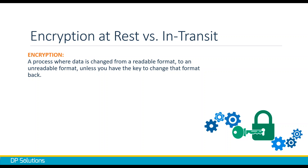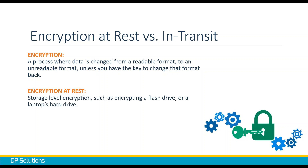This can be used both to your advantage and disadvantage. Crypto locker and ransomware exploit encryption to make your data unreadable to you — they take your data and encrypt it so you can't read it unless you buy their key. Encryption at rest refers to storage-level encryption: flash drives, laptop hard drives, etc.